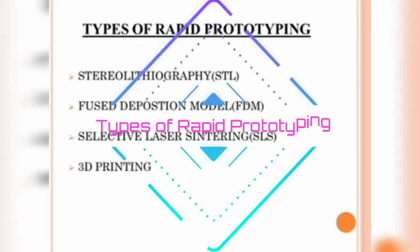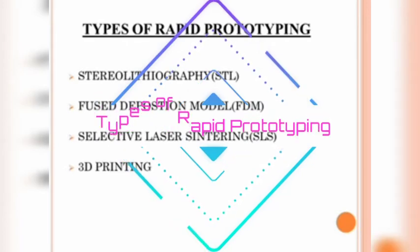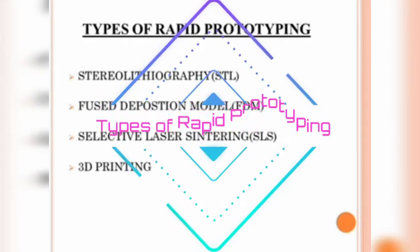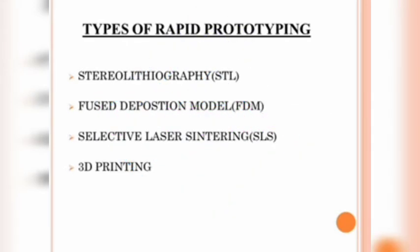There are four types of rapid prototyping. The first type is Stereolithography. The second is Fused Deposition Model. The third is Selective Laser Sintering. The fourth is 3D Printing.